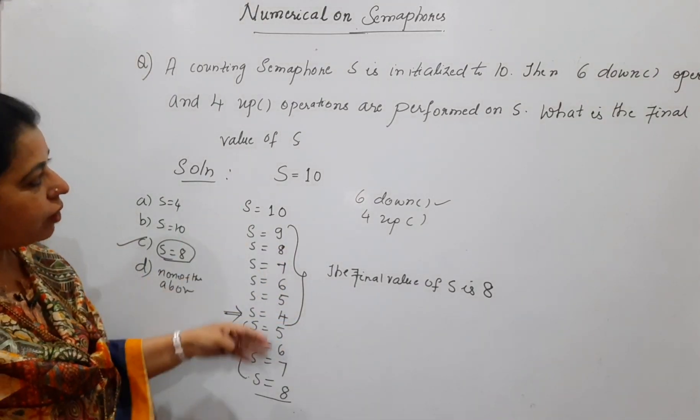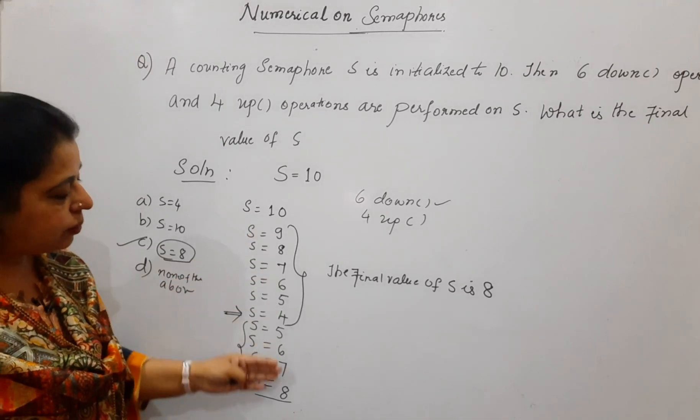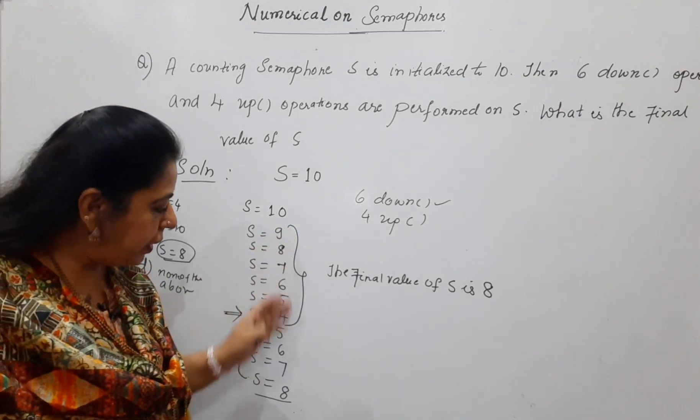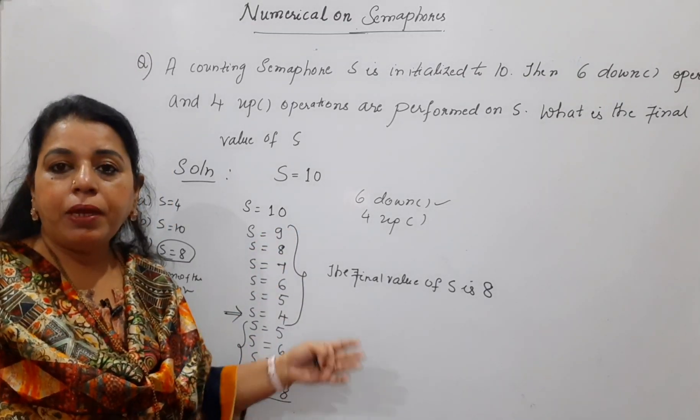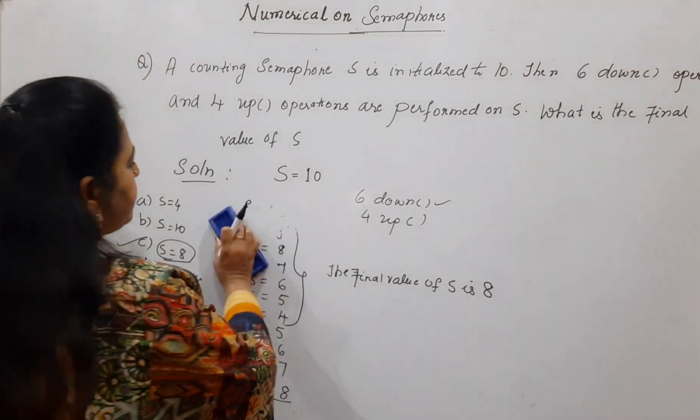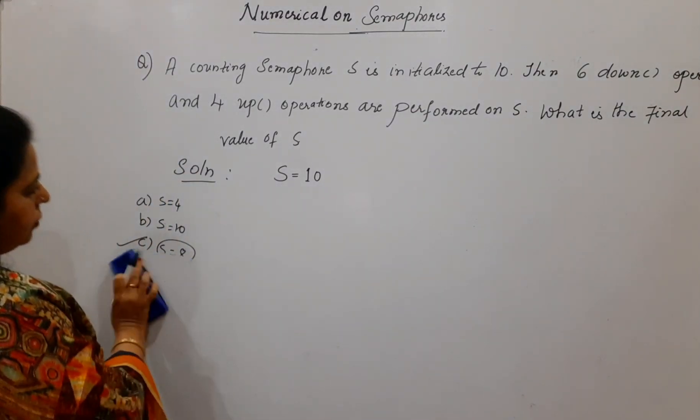Now sometimes what will happen if the larger values are given there, you cannot proceed in this manner. Suppose if 30 up operations are there, 40 down operations are there, then that many times you do not have to carry. Simply you can follow a shortcut method also. And what is the shortcut method? We will change some numbers here in the question and then I will tell you that method.